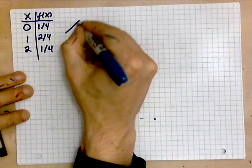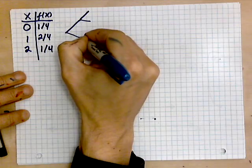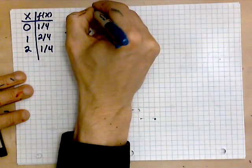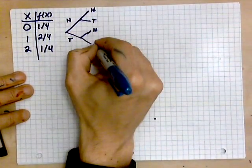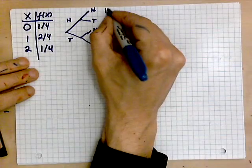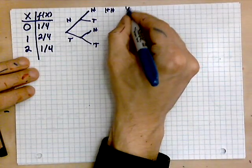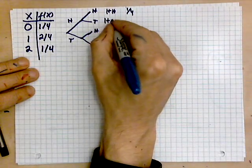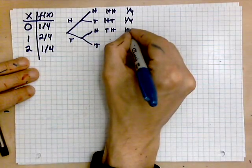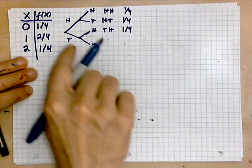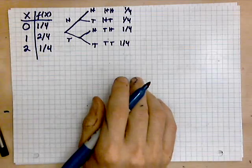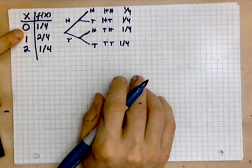And if you're not convinced just do a little tree for yourself. There you go. So this is a head, tail, head, tail, head, tail. If you get a head followed by a head, you see that that can happen in one of four ways. There are four possibilities. A head followed by a tail, that's one out of four. A tail followed by a head, that's again one out of four. And then a tail followed by a tail is again one out of four.